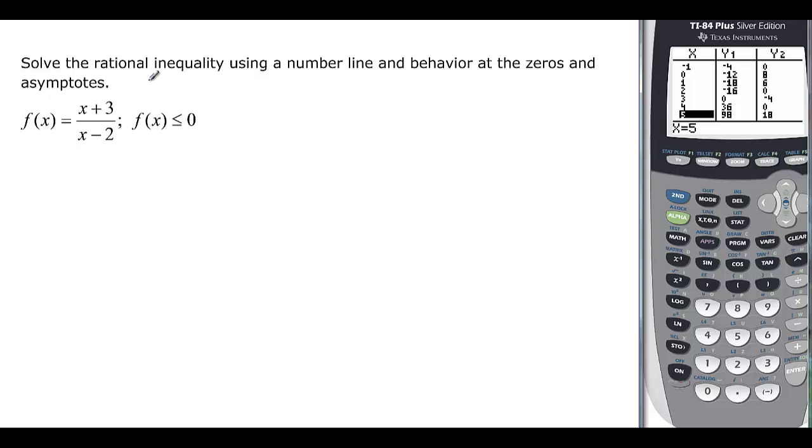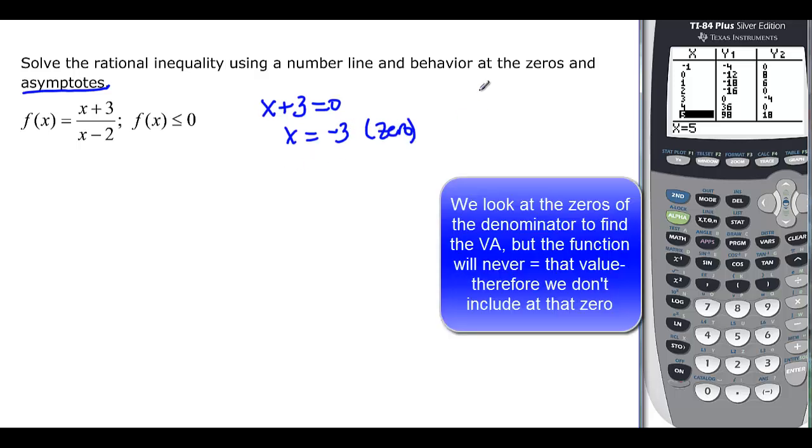Now we want to look at rational inequalities. And we want to use a number line again and behavior at the zeros and the asymptotes. And you have to remember about the asymptotes now, because remember, vertical asymptotes can't be included. So I'm going to factor all these things. Remember, factoring the top and then setting it equal to 0 will give me my x-intercept. So x is equal to negative 3 is a 0. And then I have x minus 2. So x is going to be equal to 2. And that one is going to be a vertical asymptote.